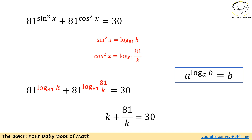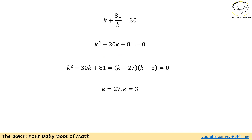Basically here, we use the identity you are seeing here. This factors as k minus 27 times k minus 3 equals to 0. So k can be 27 or 3.